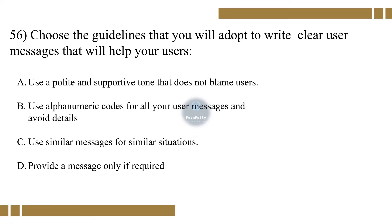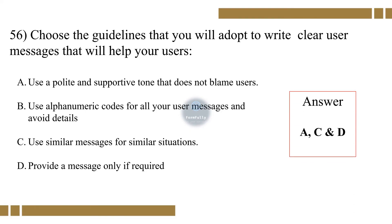Question 56. Choose the guidelines that you will adopt to write clear user messages that will help your users. Option A: Use a polite and supportive tone that does not blame users. Option B: Use alphanumerical code for all your user messages and avoid details. Option C: Use similar messages for similar situations. Option D: Provide a message only if required. The correct options are A, C, and D.